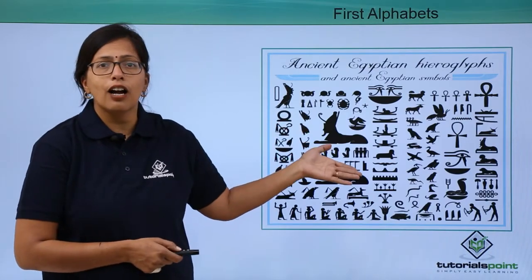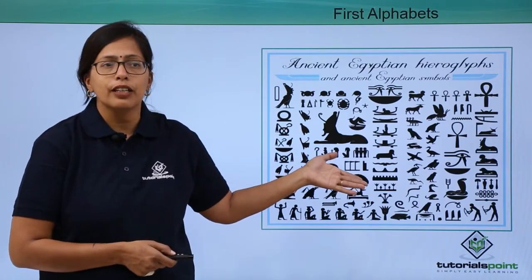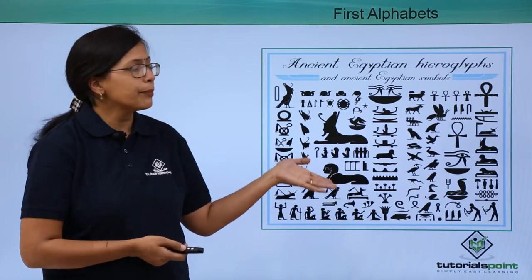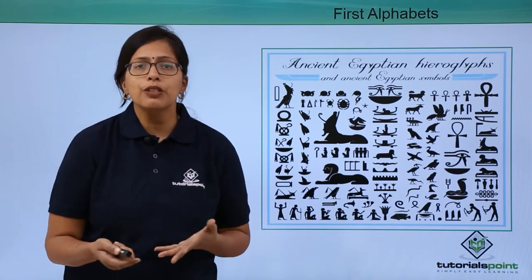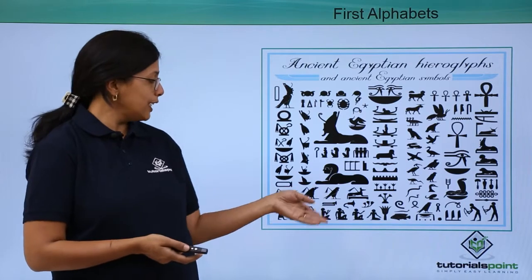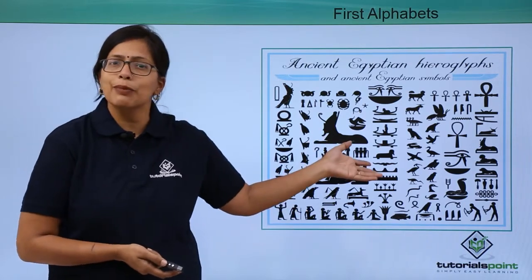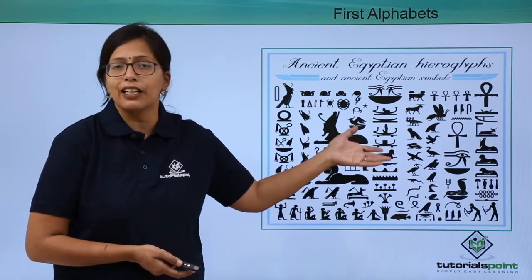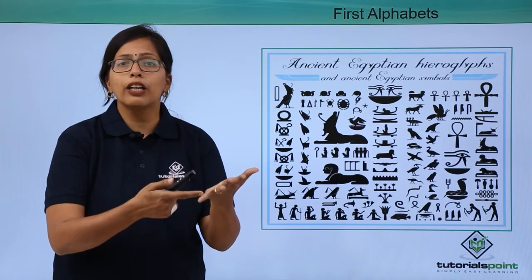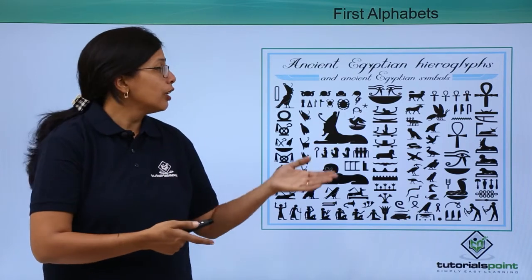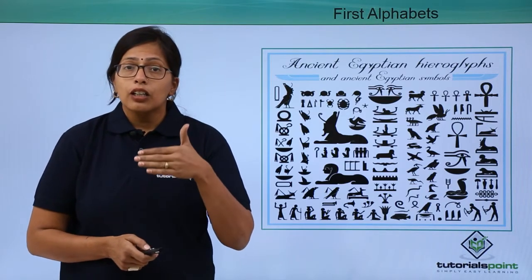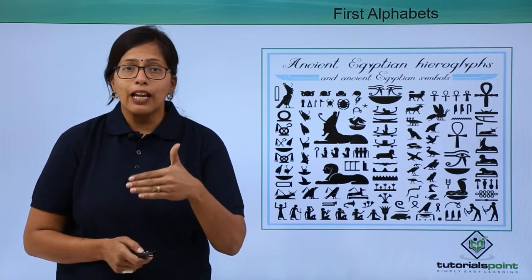What you see here are symbols — they were the precursor to alphabets. These symbols were developed by humans some 6,000 years ago. As you can see, there are separate symbols for each activity of their life: praying, sitting, cooking, hunting, or talking with each other.